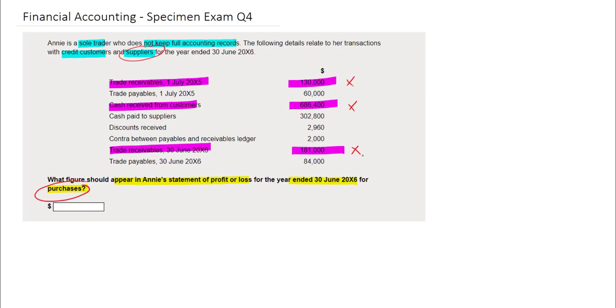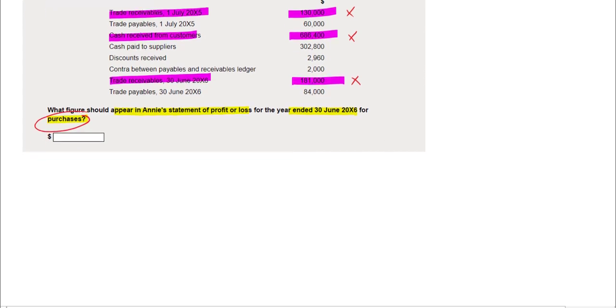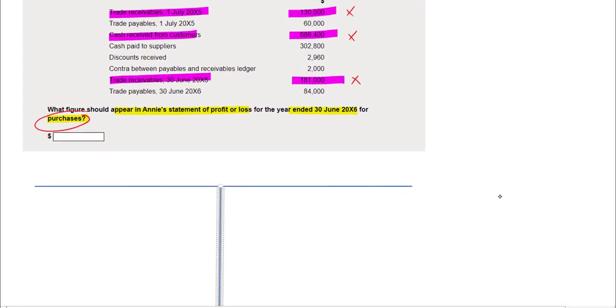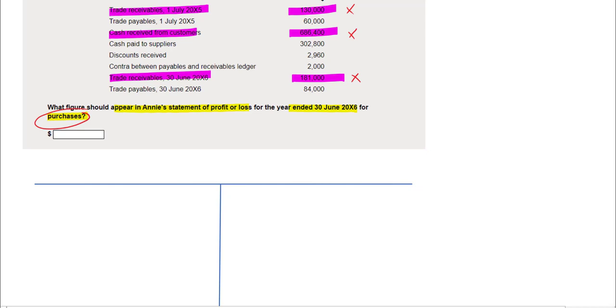The best way to approach this question is to consider producing a t-account. Let's start by getting down the heading of a t-account which will be payables. We're going to use the payables t-account and the information we have here to work backwards to get the purchases figure. Payables are a liability and therefore the balance brought forward will be a credit entry.